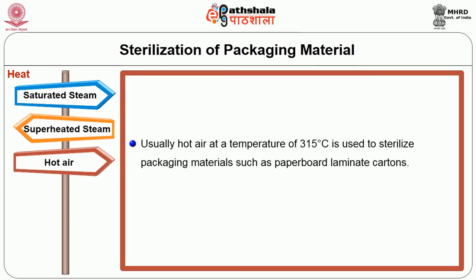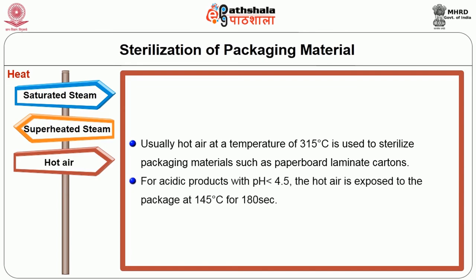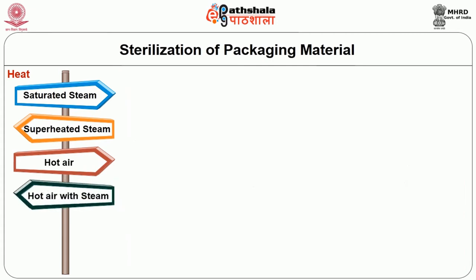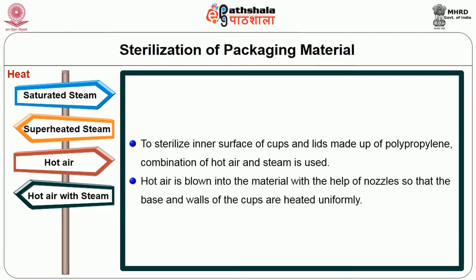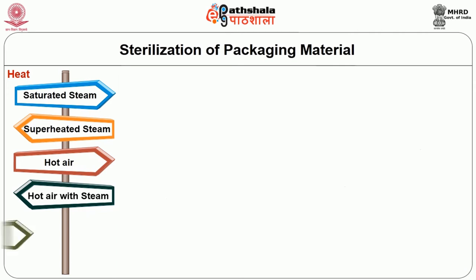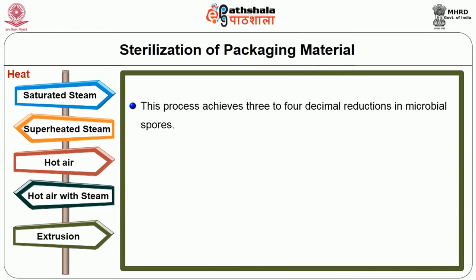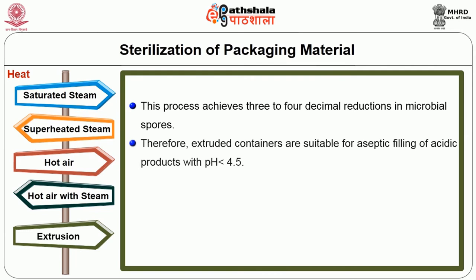Another heat medium for sterilization is hot air. Usually hot air at a temperature of 315 degrees Celsius is used to sterilize packaging materials such as paperboard laminate cartons. For acidic products with pH less than 4.5, the hot air is exposed to the package at 145 degrees Celsius for 180 seconds. Hot air combined with steam gives an effective sterilization effect on packaging materials. To sterilize the inner surface of cups and lids made up of polypropylene, a combination of hot air and steam is used. Hot air is blown into the material with the help of nozzles so that the base and walls of the cups are heated uniformly.